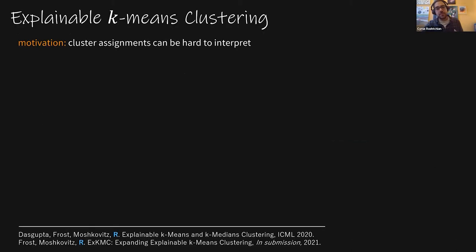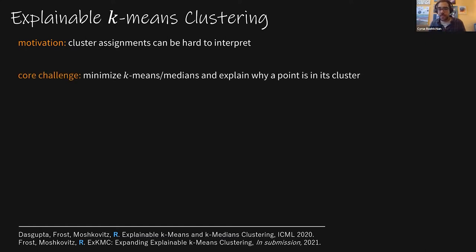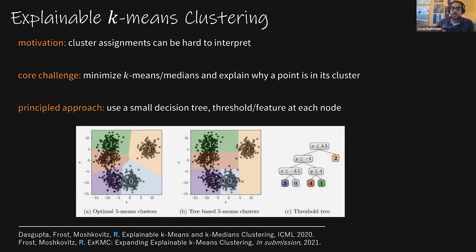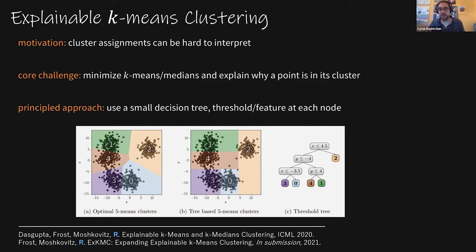Our motivation was to understand how to interpret the cluster assignments. In particular, we want to minimize the K-means cost while also being able to explain why a point ended up in its cluster. We use a decision tree to do this. Here's an example where on the left is a near-optimal five-means clustering, the middle is a tree-based clustering where all the splits are axis-aligned, partitioning the space into rectangles, and the tree that generates this clustering is on the right.